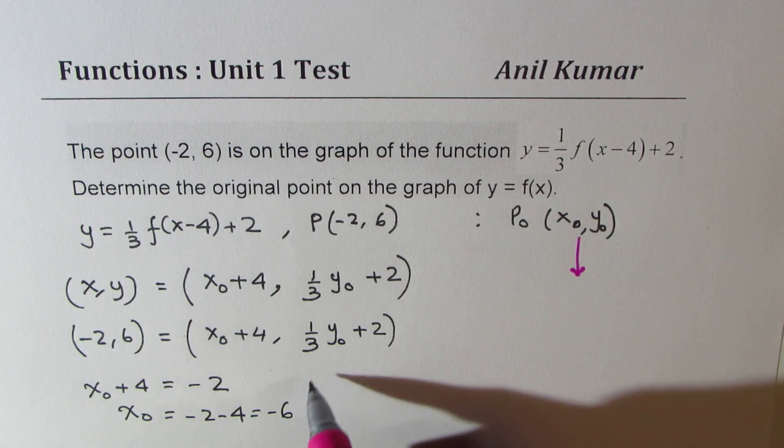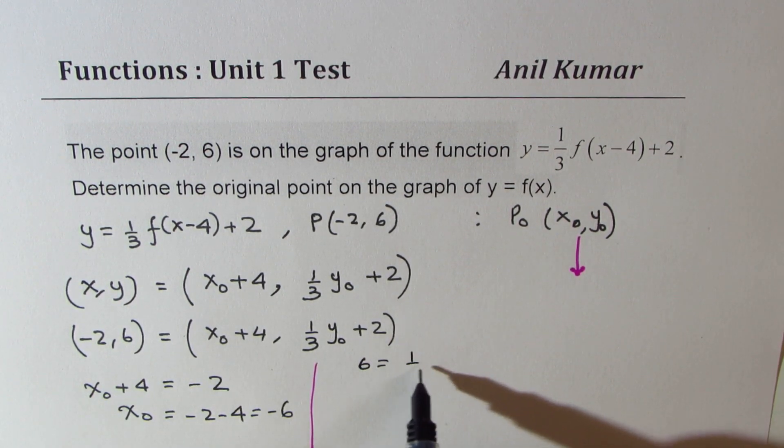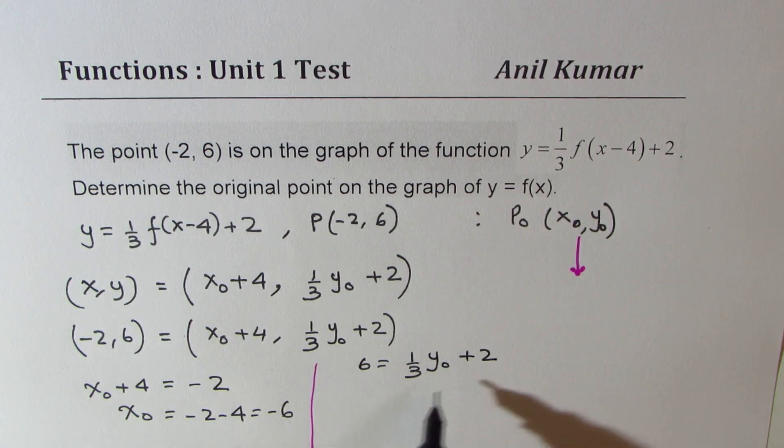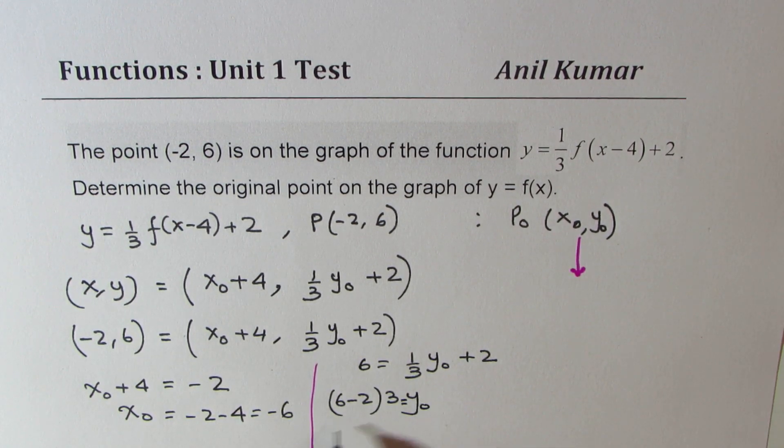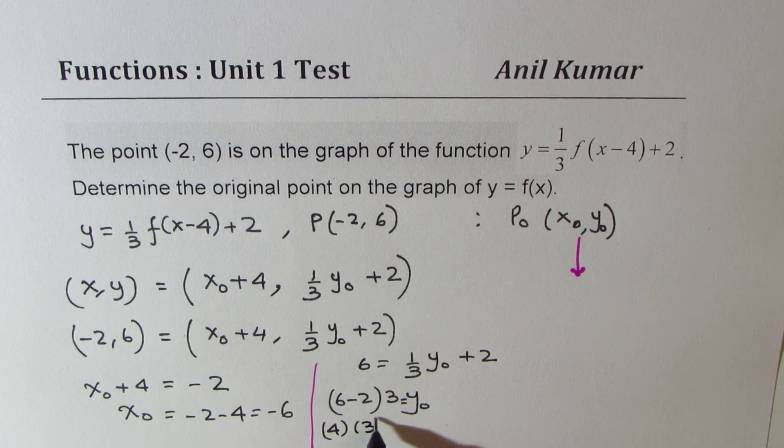Now let's calculate the y coordinate value, which is 6 equals 1/3 y₀ + 2. So we'll take away 2 and then multiply by 3 to get the value of y₀, which is 4 times 3, which is 12.